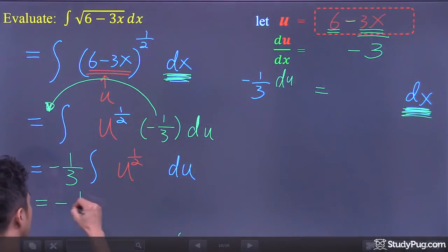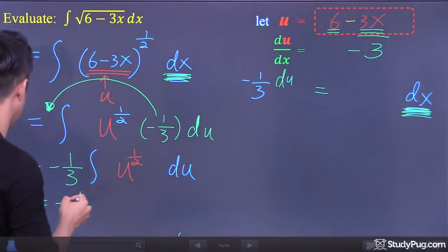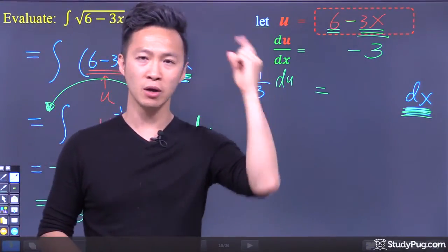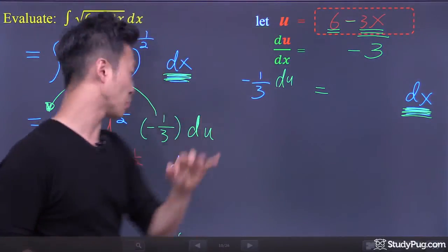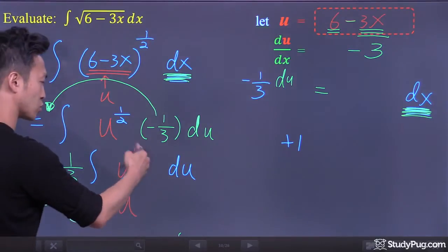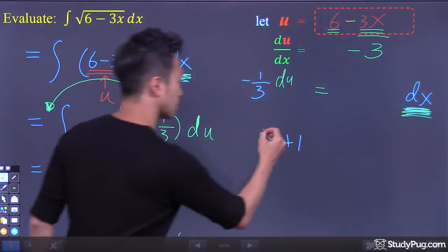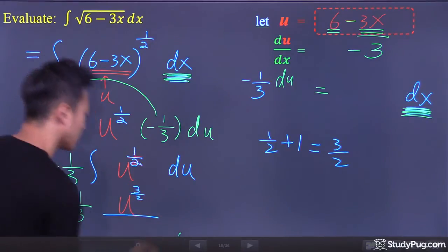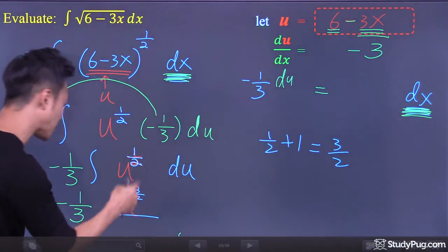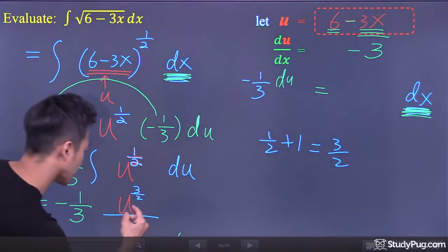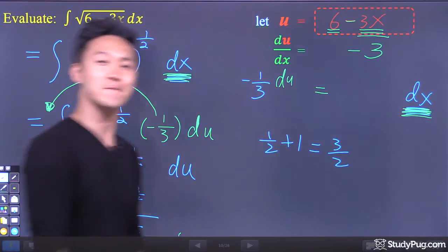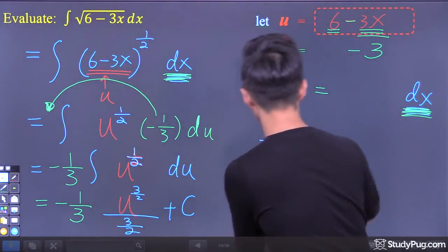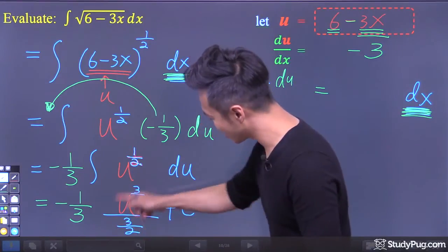So we've got negative 1 over 3. Now let's find the antiderivative of a function in exponential form using two simple steps. First step: add 1 to the original exponent. So 1 over 2 plus 1 is 3 over 2. Second step: whatever value we get at the exponent, copy that exact same value to the denominator — so put 3 over 2 at the denominator as well. And don't forget to add an arbitrary constant.